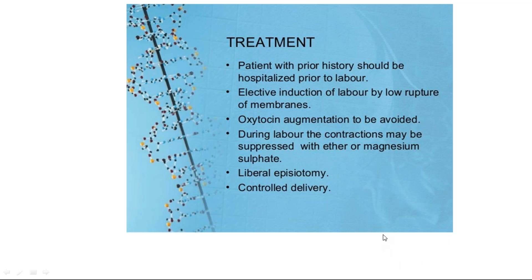Management of precipitate labor: patients usually have a previous history of fast delivery. Those with such history should be hospitalized prior to labor and have an elective induction by ARM — artificial rupture of membranes — only. Do not start oxytocin or misoprostol for augmentation or induction. Just do an ARM and keep the patient in bed throughout the first and second stages. This way you can avoid injuries to the baby. If contractions are very vigorous, you can suppress them with ether, magnesium sulfate, or terbutaline injections.